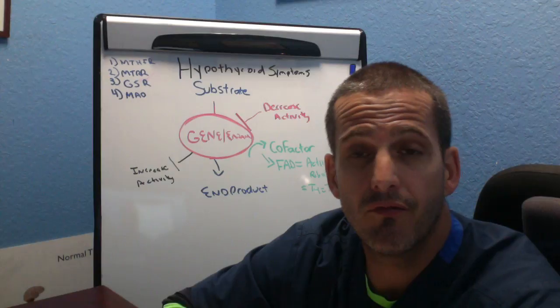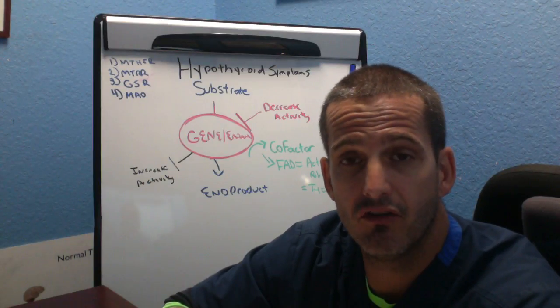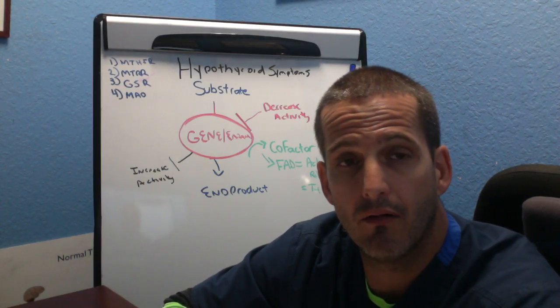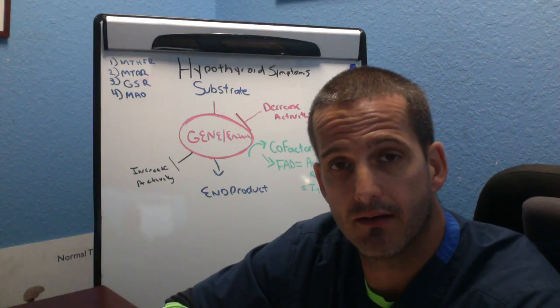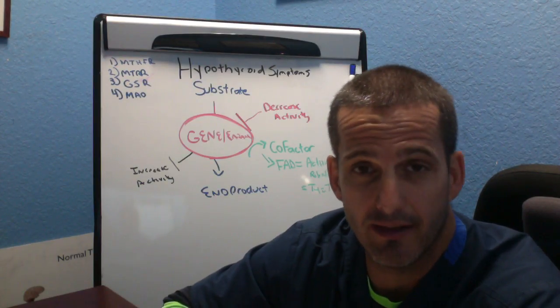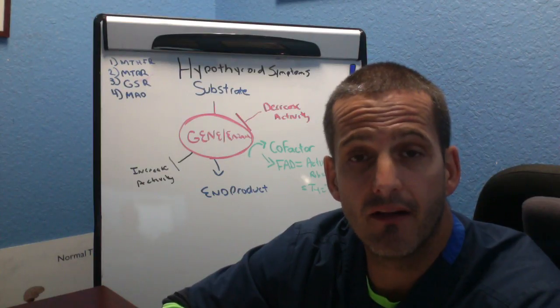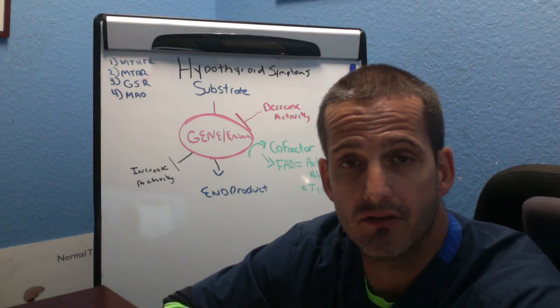So those are four major areas: energy, recycling of B12, recycling of GSR for antioxidant production, and neurotransmitters that are genetically based that we can really help hypothyroid patients.